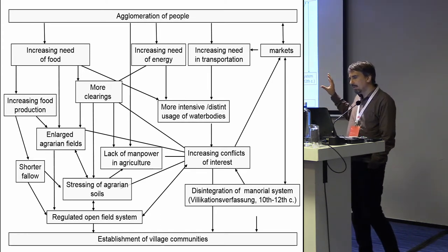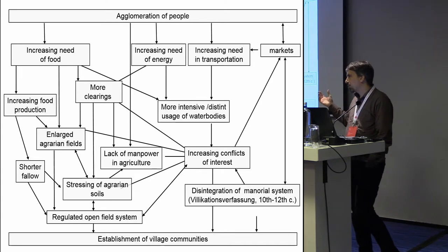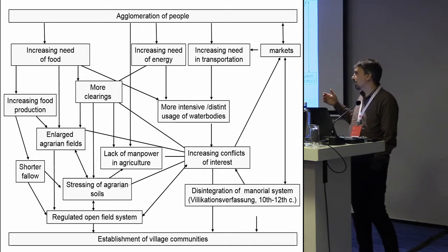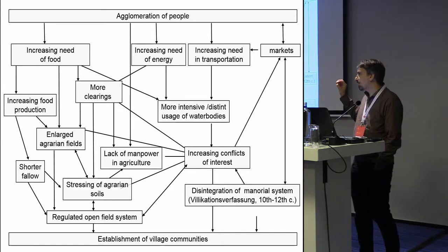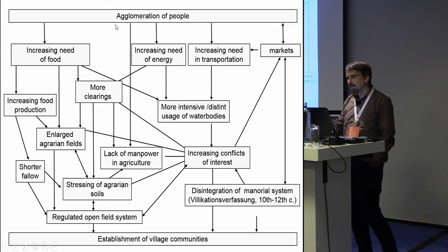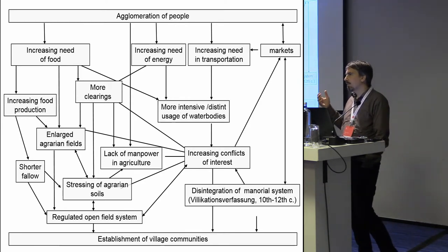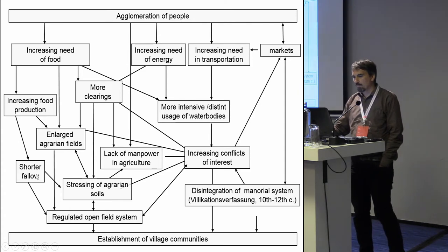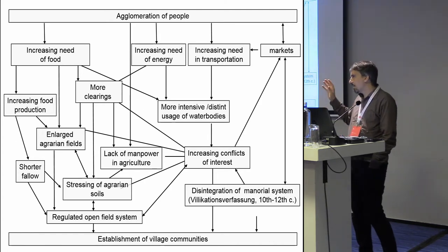The development of villages is in fact the result of change from a dispersed to a nucleated settlement system. Several interrelations can be identified: increasing population, agglomeration of people, increasing need for food and more food production, with consequences for land use practices — such as shorter fallow periods, enlarged agrarian fields, and removal of hedges. It's a complicated system, but we need to take this as a framework to understand what happened in the settlement landscape.